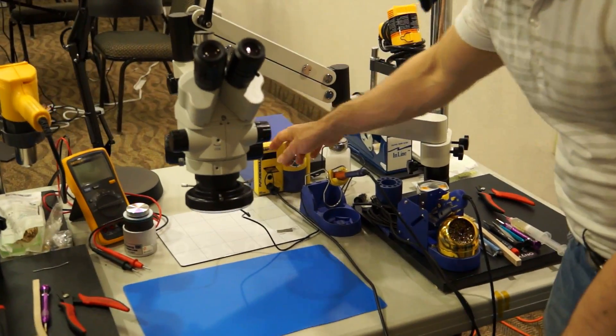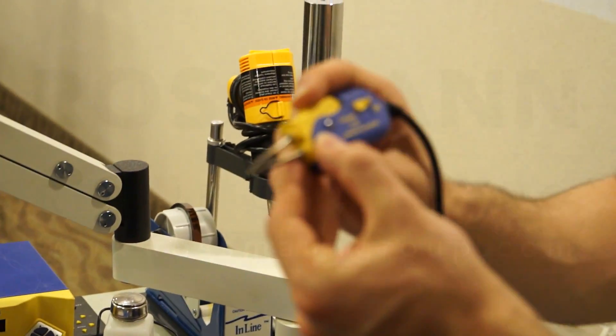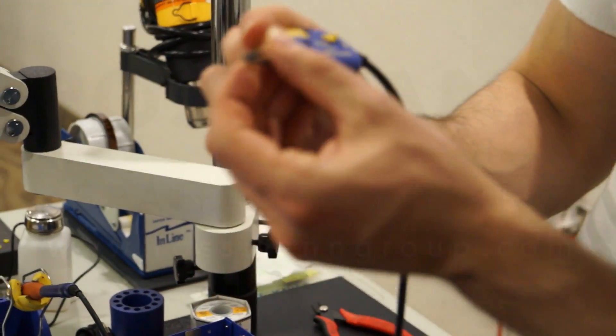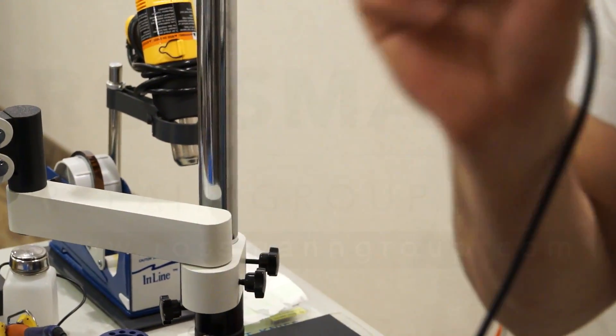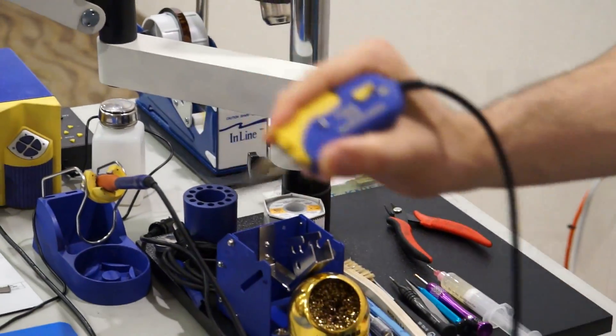You also have the Hakko FM202 stations over here. So everybody gets a set of FM2023 hot tweezers. You're not just working with a $50 soldering setup. You get to work with these hot tweezers that allow you to replace the smallest package on every single iPhone and iPad board very easily, very quickly.